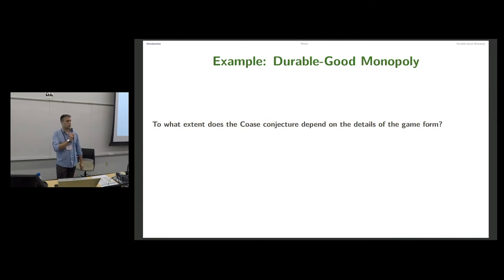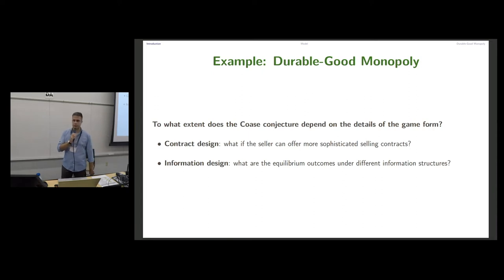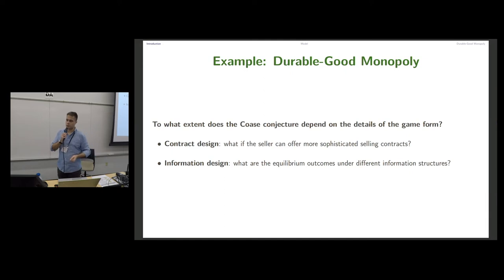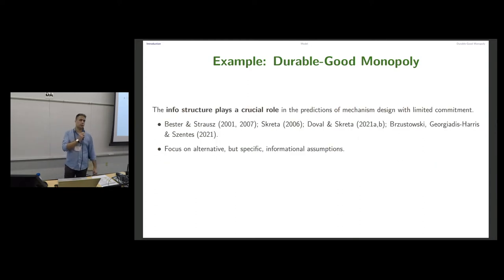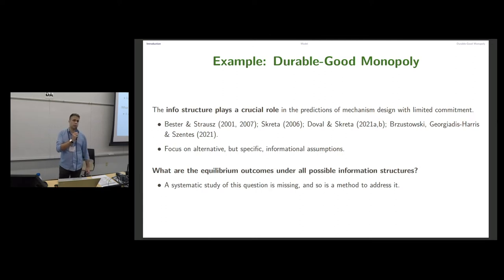One may ask to what extent the Coase conjecture depends on the details of the game form. This can be addressed from two viewpoints: contract design — what if the seller can offer more sophisticated selling contracts — and information design — what are the equilibrium outcomes under all possible information structures? The recent literature shows that information structure plays a crucial role in mechanism design problems with limited commitment, but existing work typically focuses on alternative but specific informational assumptions. The question we want to address is: what are the equilibrium outcomes under all possible information structures in mechanism design problems with limited commitment?